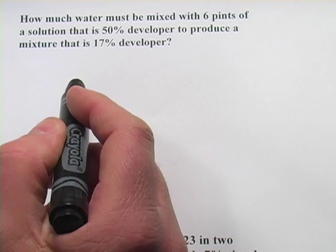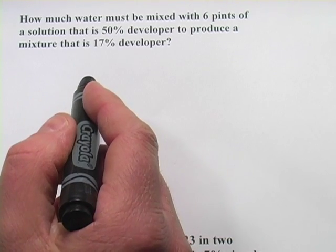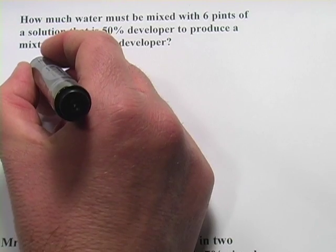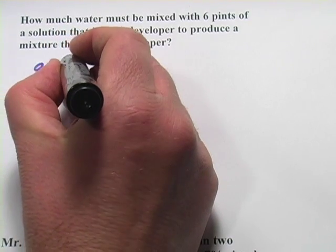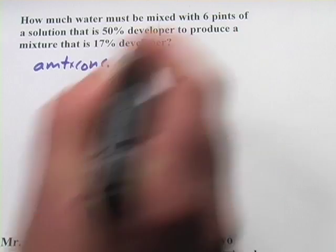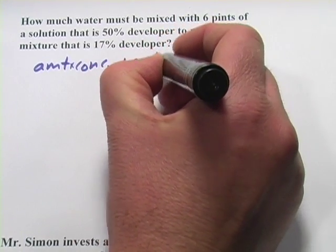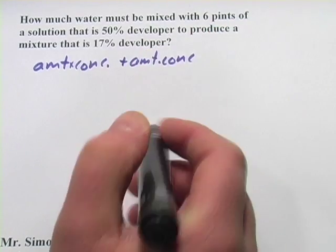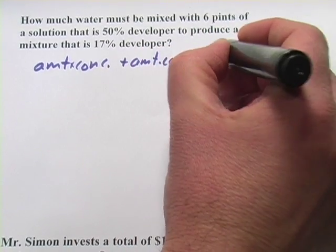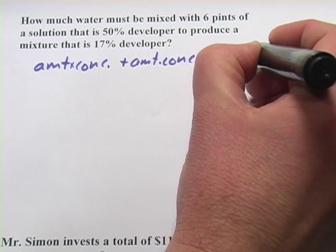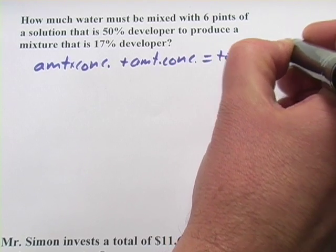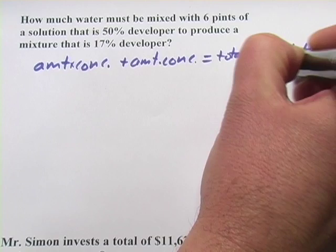Whenever you see a percent concentration problem like this, the basic formula is going to be amount times concentration of the first liquid plus the amount times the concentration of the second liquid that you're adding it to is going to equal the total amount times the total concentration.